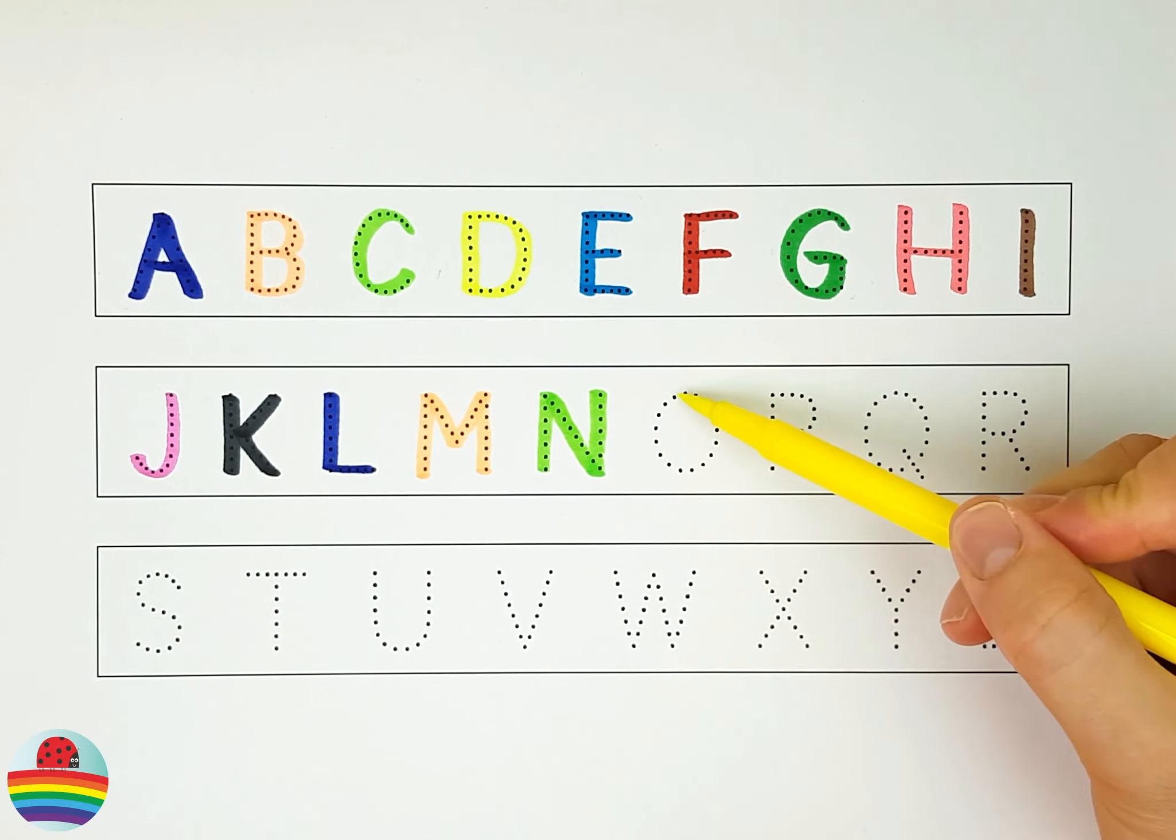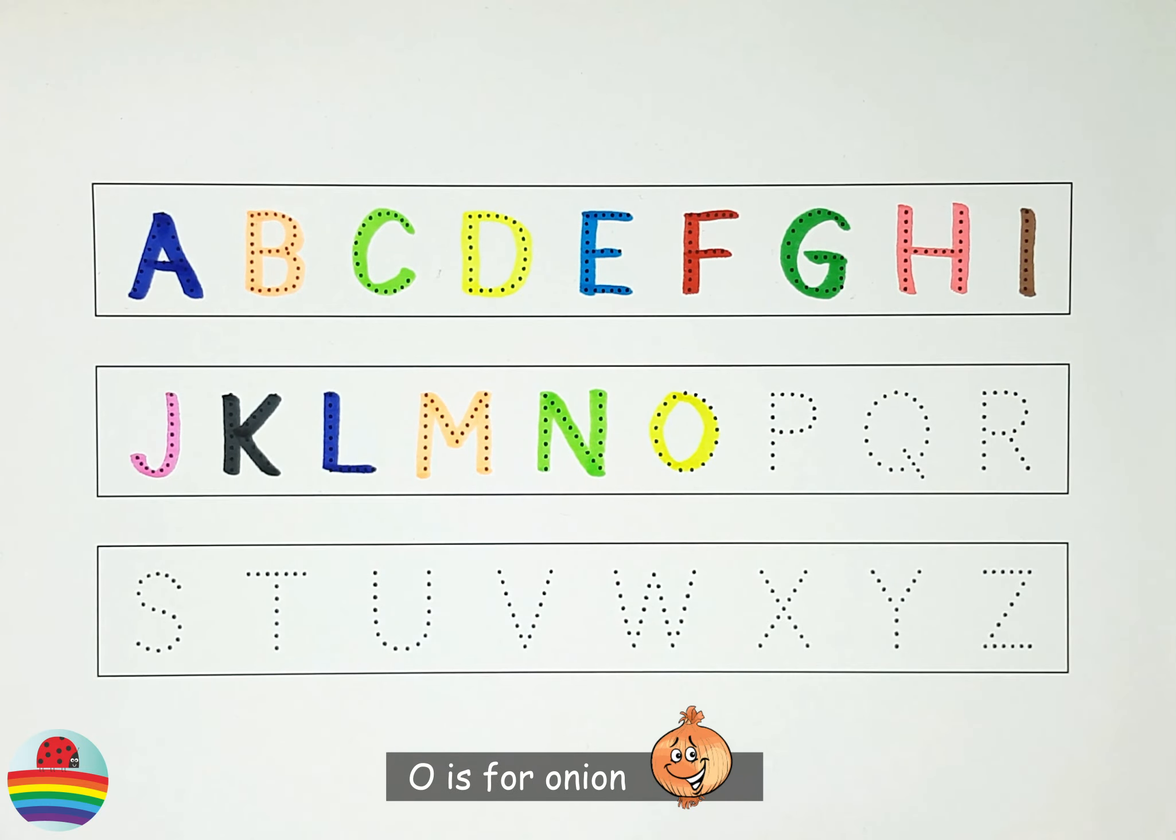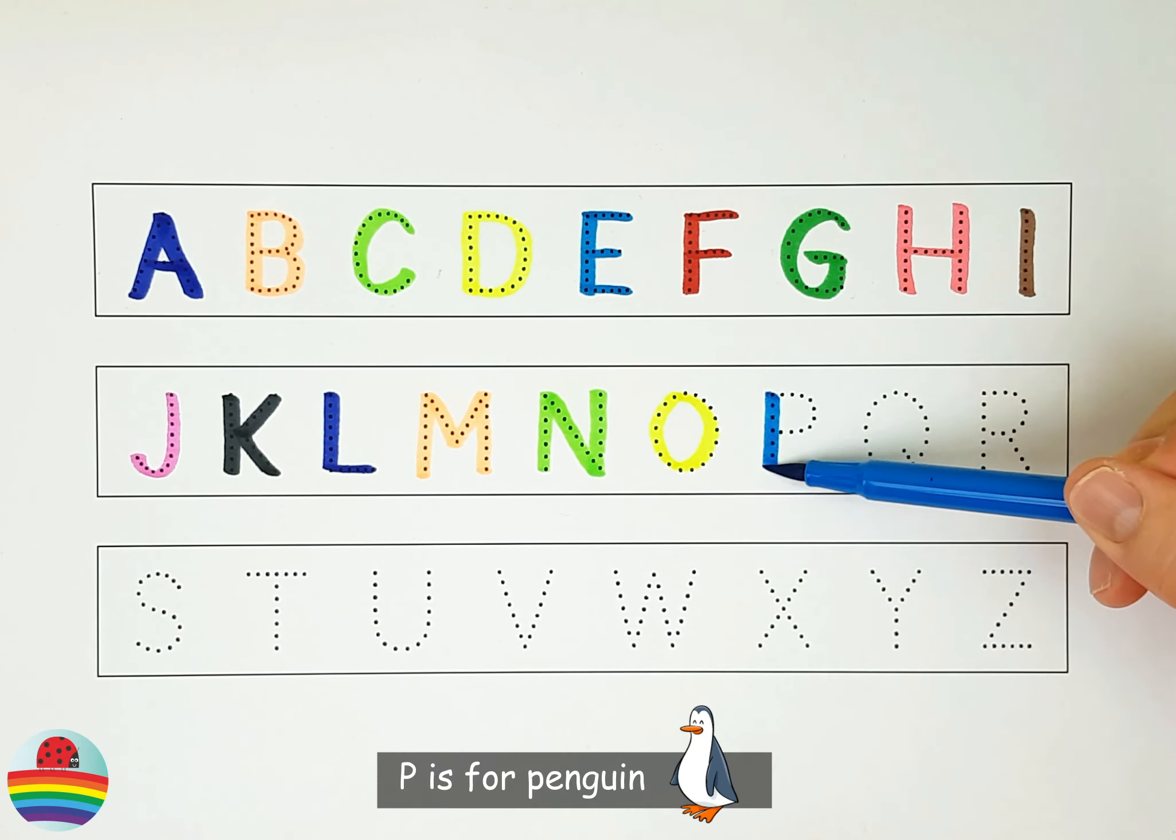M. M is for mouse. N. N is for nail. O. O is for onion.